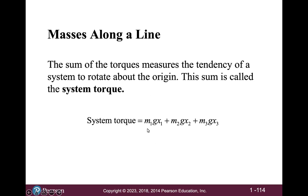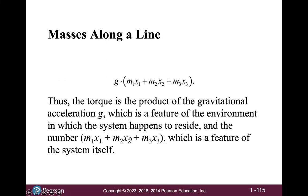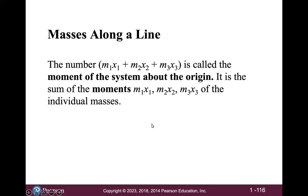So the system torque is equal to m1 g x1 plus m2 g x2 plus m3 g x3. Thus, the torque is the product of the gravitational acceleration g, which is a feature of the environment, and the number m1 x1 plus m2 x2 plus m3 x3, which is a feature of the system itself, not necessarily just three masses.